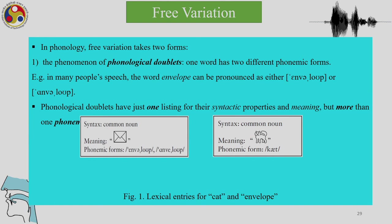In phonology, free variation takes two forms. The first is the phenomenon of phonological doublets, where one word has two phonemic forms. For example, in many people's speech the word 'envelope' can be pronounced in different ways. Phonological doublets have one listing for their syntactic properties and meaning but more than one phonemic form — this kind of free variation is not determined by context.